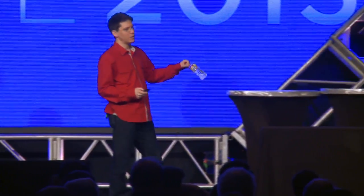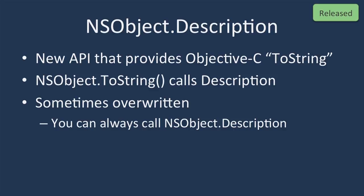Now let's talk about APIs. Here are a couple of debugging aids that will help you build better applications. The first is a property called Description on NSObject, introduced this year. This property is the Objective-C equivalent of ToString from C#, giving you a low-level rendering of the underlying Objective-C object. The NSObject.ToString call basically calls Description, but if you override ToString, you can always get to the underlying representation by calling Description directly. This is already released.